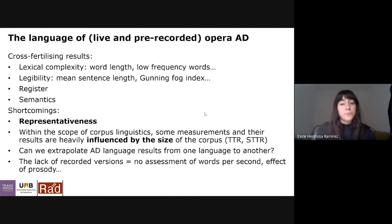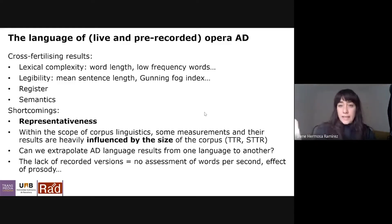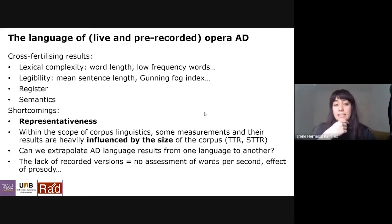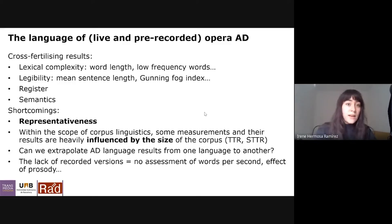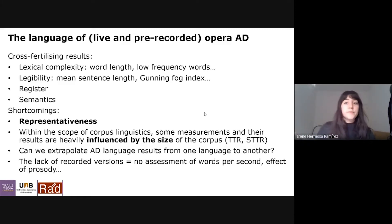Let's jump into the linguistic aspect of the research. What we can bring to the table are the characteristics of opera audio description scripts. We're going to assess lexical complexity, legibility, register, and semantics. We're going to compare our scripts with previous corpus studies on audio description — namely film and museum, which are the most researched in this regard language-wise — and also with samples of general language. How does Spanish and Catalan opera differ from just general language use?